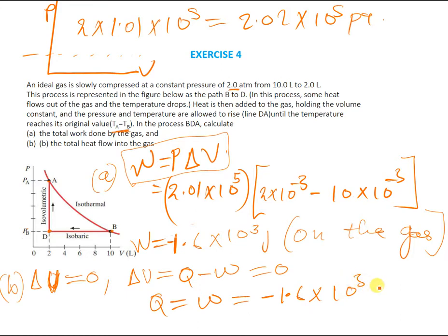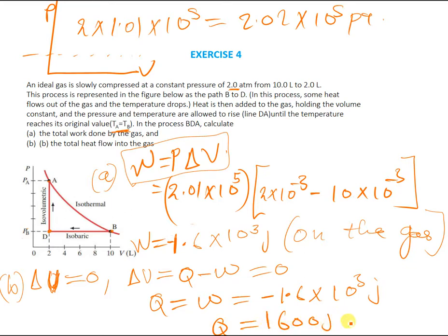So Q = −1.6 × 10^3 Joules. Since Q is negative, it means that 1,600 Joules of heat flows out of the gas over the whole process. If Q had been positive, heat would be flowing into the gas. The negative sign confirms that 1,600 Joules of heat flows out of the process.